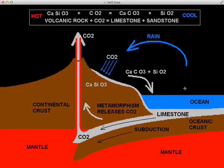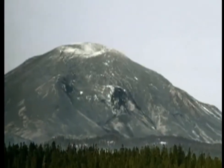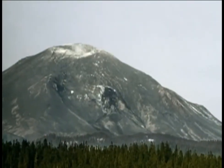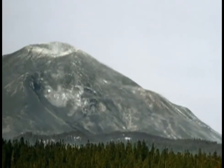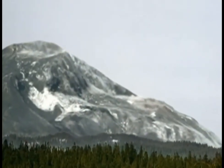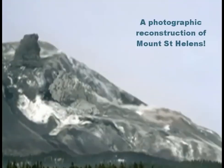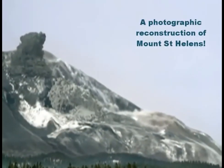That's the end of this lesson. I'm going to leave you with a little clip showing the power of a volcano — a photographic reconstruction of an eruption which blew the side of Mount St. Helens. It happened in 1980 in Northwest America.